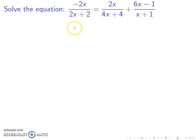We now want to solve this equation, and the first step in solving these equations would be to factor denominators. We can see this one has a 2 in common, so this factors into 2x plus 1, and this has a 4 in common, so 4x plus 1.